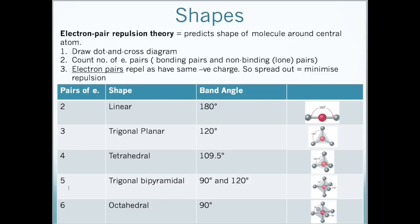Five pairs of electrons, the shape will be trigonal bipyramidal. There will be two bond angles of 90 degrees and 120. And finally, if we have six pairs of electrons, the shape will be known as octahedral. The bond angle will be 90 degrees as shown here.